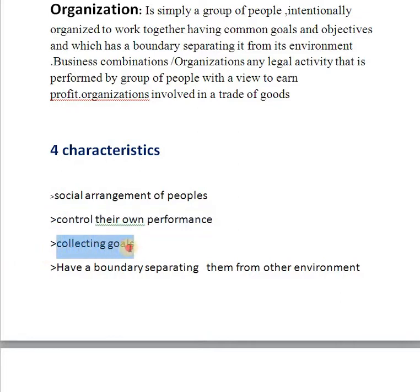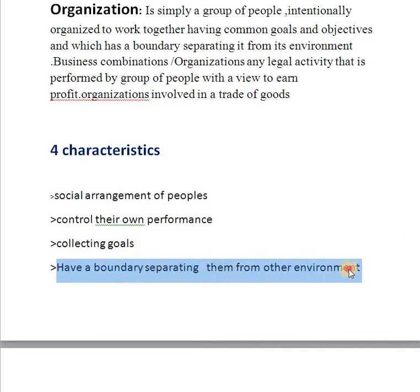The next characteristic is collective goals. Organizations are defined by their goals. The main goal of a school is to educate people; it will therefore be organized differently to a company that aims to make a profit. The last characteristic is having a boundary separating the organization from its environment.